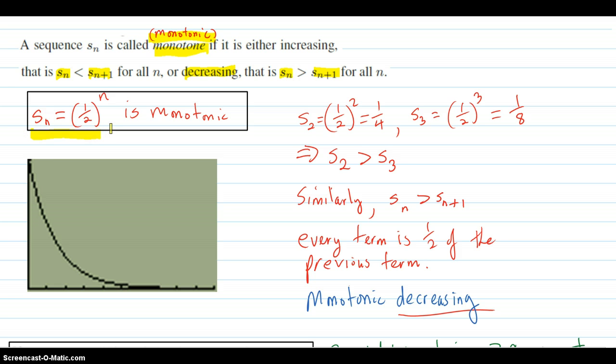For example, one half to the n is monotonic decreasing. The graph of y equals one half to the x, which is sort of the general equation. For the sequence terms themselves, you can just put these integer values in there and then get specific values.